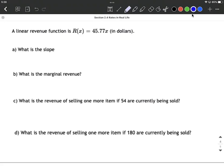First of all, what's the slope of this line? Let's go back to what we know about linear functions. We can think y equals mx plus b. In this case, we don't have a b, or we could say plus zero at the end, but m is our slope. So 45.77 is the slope of this linear revenue function.